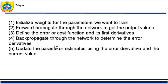Step four: backpropagate through the network to determine the error derivatives. We backpropagate the error derivatives — for example, if E is the error and we have weights W1, W2, W3, we find dE/dW1, dE/dW2, dE/dW3, and so on. Whatever the weights are, we find the error with respect to those weights — that is called the error derivative. Step five: update the parameter estimates using the error derivative and current value. For example, my new W1 equals the old W1 minus a certain value subtracted from it. All of this I will teach through an example.